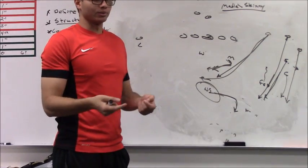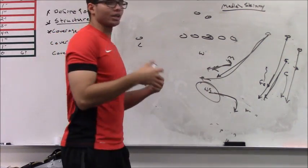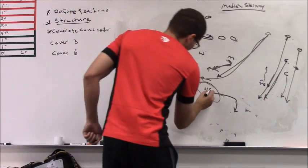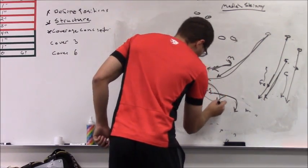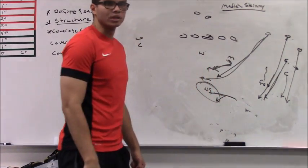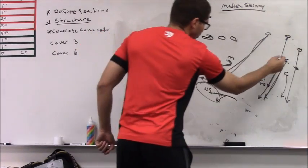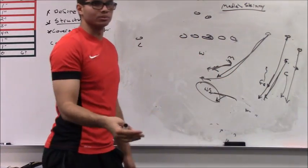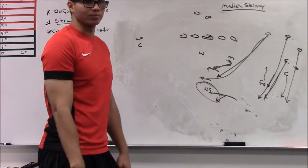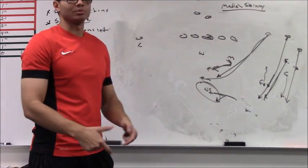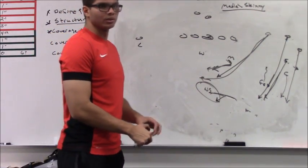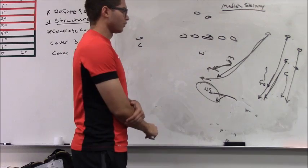Which also means, if you have to, because of a mismatch or because of play action, you could have the weak safety really lean towards the number 3, if you really had to, because you know the strong safety is going to take 2 up in the seam versus 4 verts. So, play action doesn't become as big a problem for you.